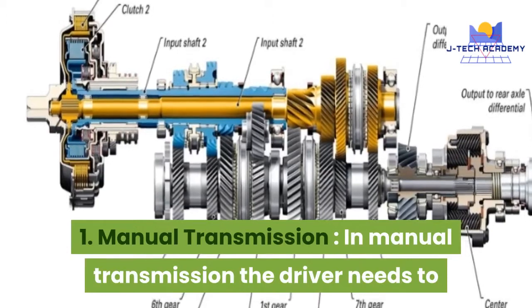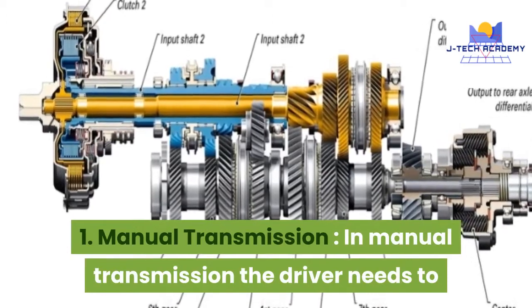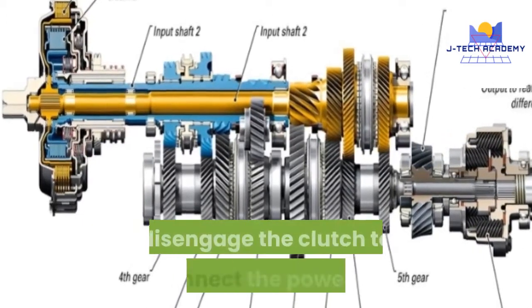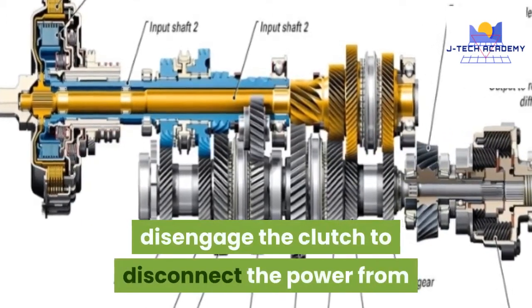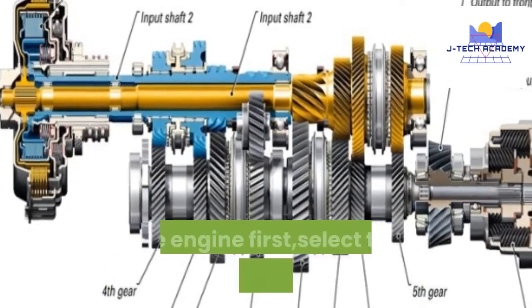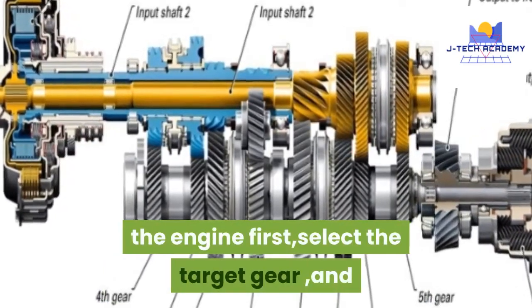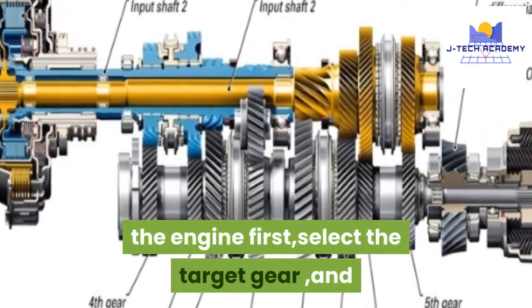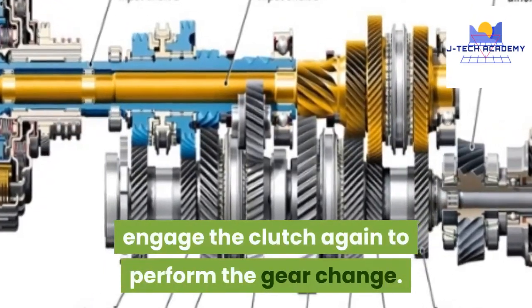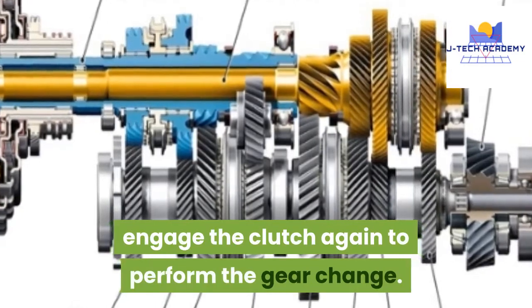In manual transmission, the driver needs to disengage the clutch to disconnect the power from the engine first, select the target gear, and engage the clutch again to perform the gear change.